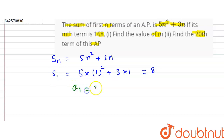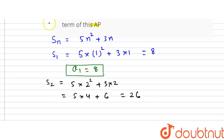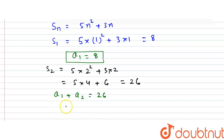In a similar manner, we can find S2. The value of S2 equals 5×2² + 3×2, which equals 5×4 + 6 = 26. The meaning of S2 is the sum of two terms, meaning a1 + a2 = 26. So the value of a2 equals 26 minus a1, which is 26 minus 8 equals 18.